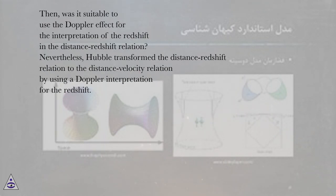Then, was it suitable to use the Doppler effect for the interpretation of the redshift in the distance-redshift relation?